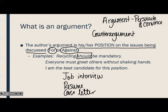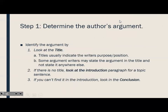Now that we've refreshed what an argument is, let's talk about how we find one inside a piece of writing. The first thing we want to do is look at the title. We know the title states the main idea, so it helps us understand what the whole piece is about. When dealing with an argument, the title can also indicate the writer's purpose or position on a topic. Sometimes the writer states the argument only in the title, so it's really important to read the title first.